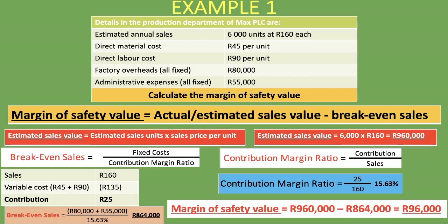So what does the margin of safety value mean? In this case, 96,000 rand means the company is able to make a profit of 96,000 rand. But it also means that if the company's sales fall by 96,000 rand or more, it will start being unprofitable. The greater the margin of safety value, the better it is for the company, as it can deal with fluctuations in sales. The smaller it is, the less able the company is to handle those fluctuations — and that also indicates business risk. The company needs to pay attention to this in setting its prices and in reducing the costs it incurs in producing its units, as that is how it can increase the margin of safety value.